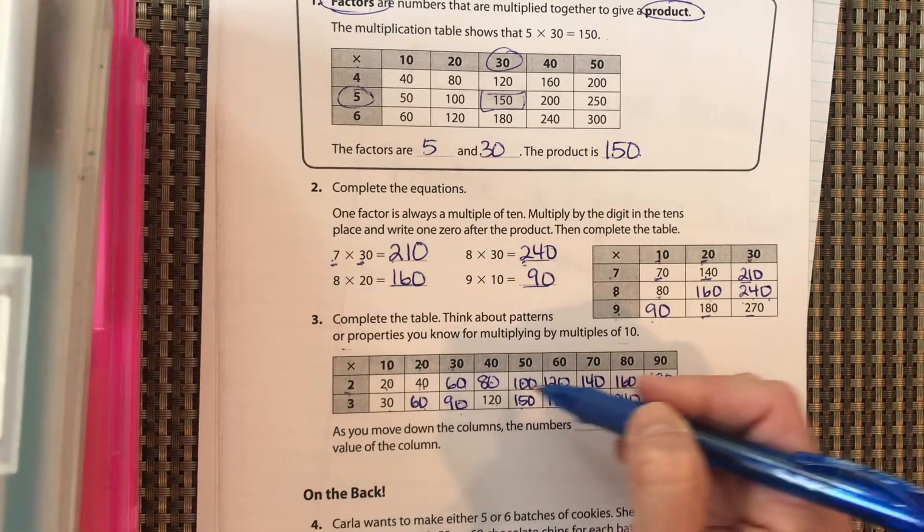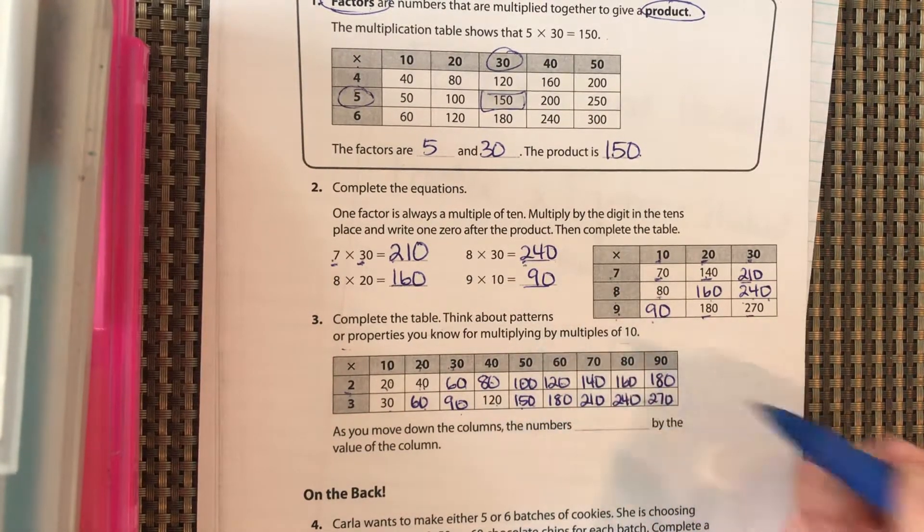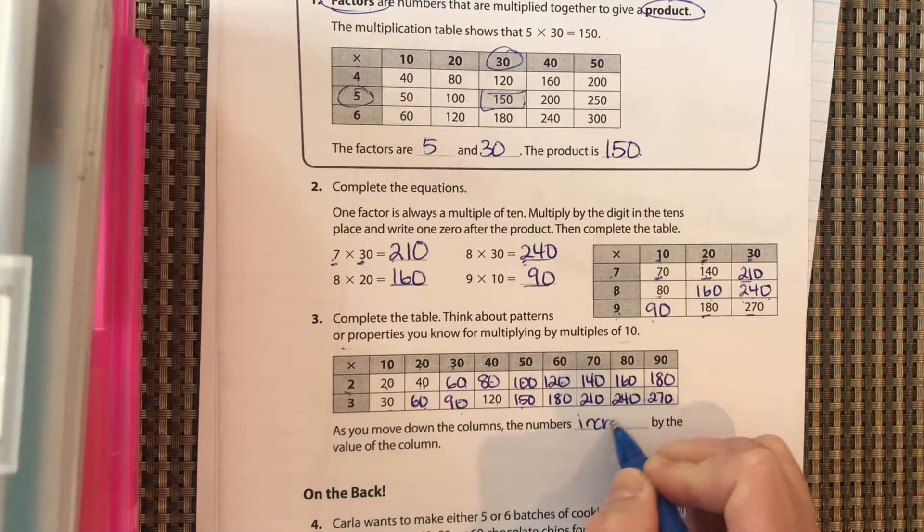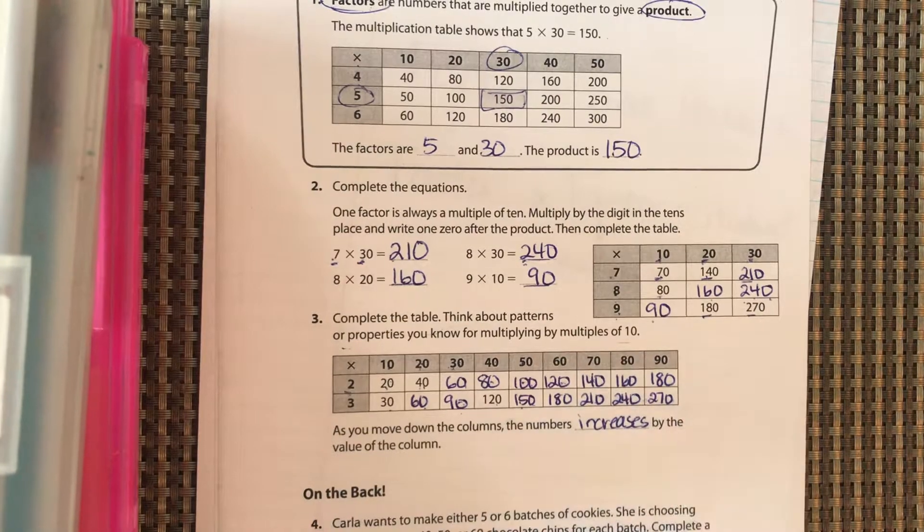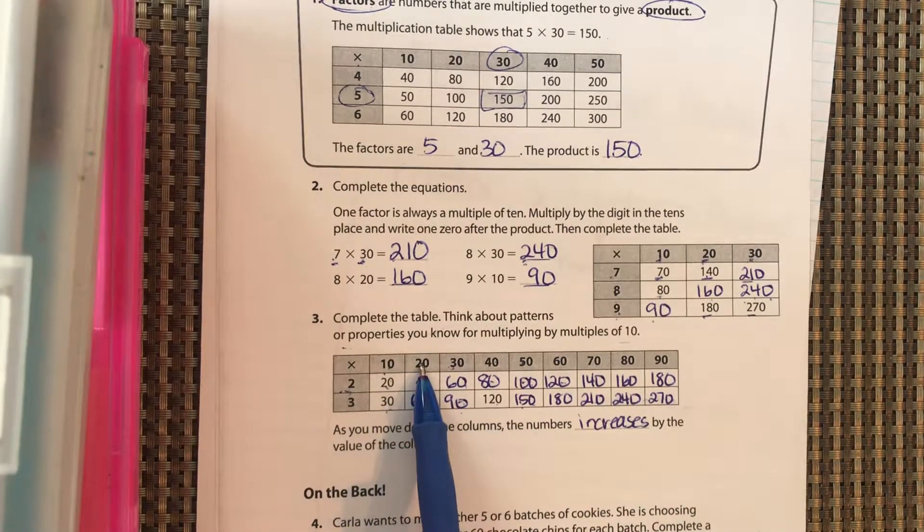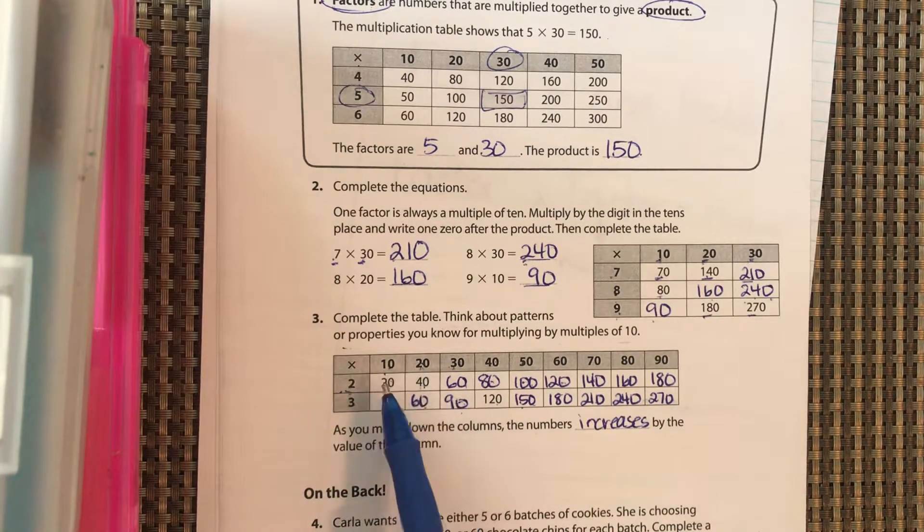Okay, as you move down the columns—okay, if you're looking at this: 20 to 40, 30 to 60, 60 to 90, 80 to 120, 100 to 150—each time the number increases by the value of the column. Because this is multiplied by 10, so it goes up 10; it's multiplied by 20, so it's going to go up 20.